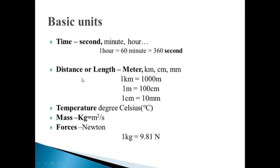The next quantity is distance or length. This distance or length is measured in different units — for example, meter, kilometer, centimeter, and millimeter. The standard unit for measuring distance or length is a meter. The relations are: 1 kilometer is equal to 1000 meters, 1 meter is equal to 100 centimeters, and 1 centimeter is equal to 10 millimeters.